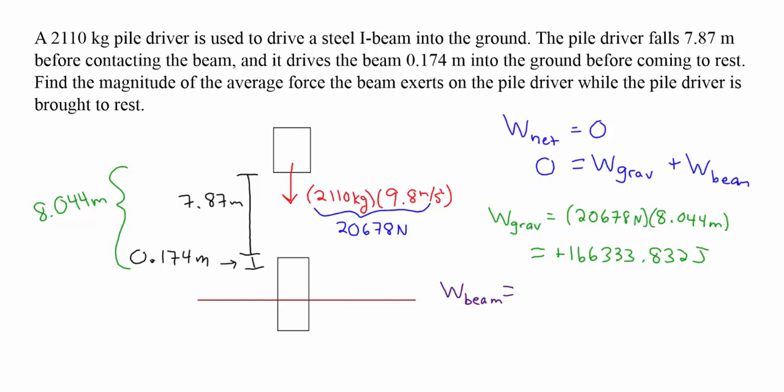For the work done by the beam, the force of the beam that we're trying to find only acts over the final 0.174 meters. So the work done by the beam is negative F times 0.174 meters, but that has to equal the opposite of the work done by gravity. So it has to equal negative 166,333.832 joules.